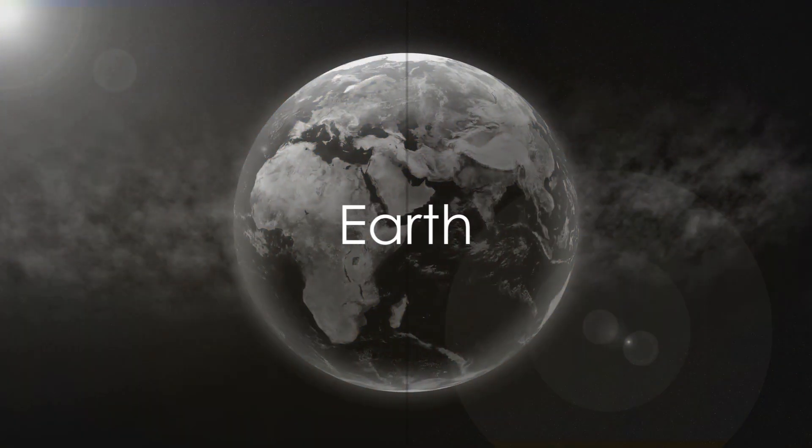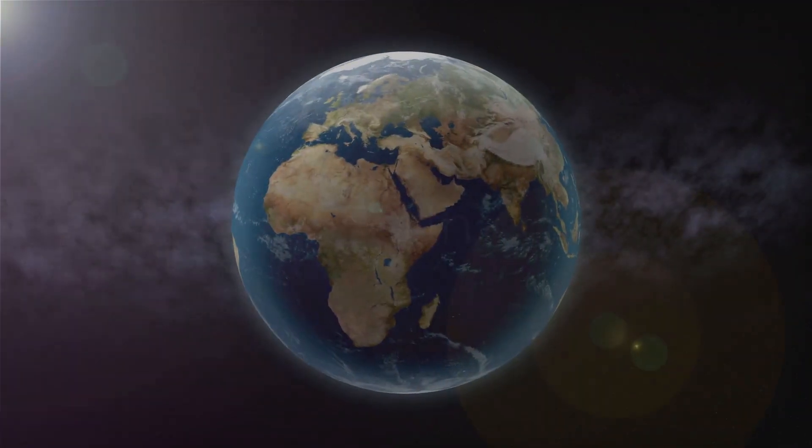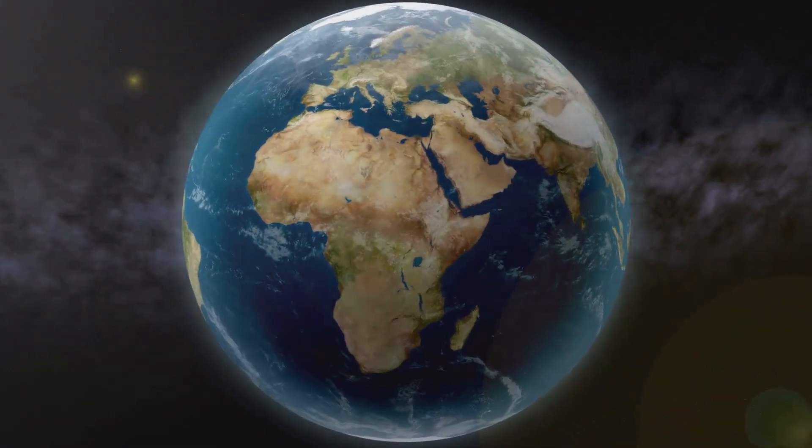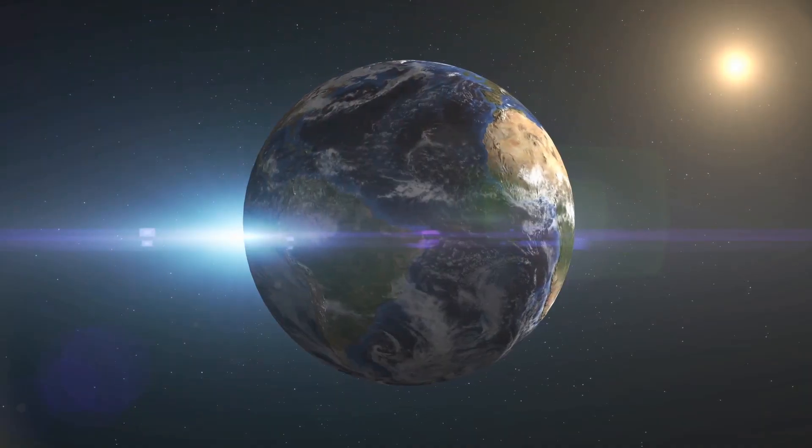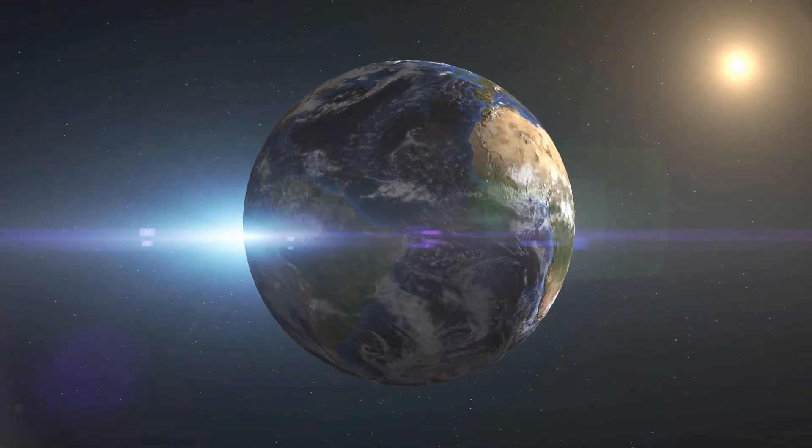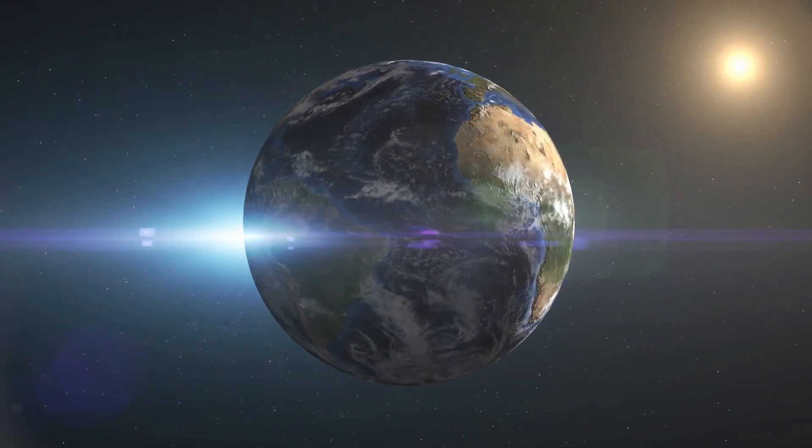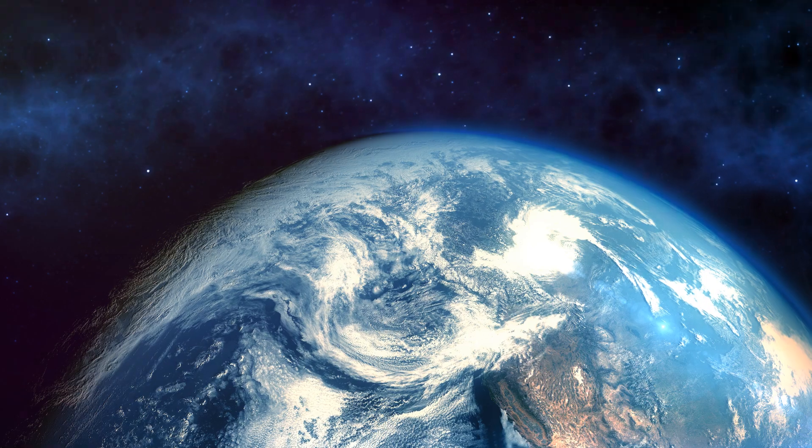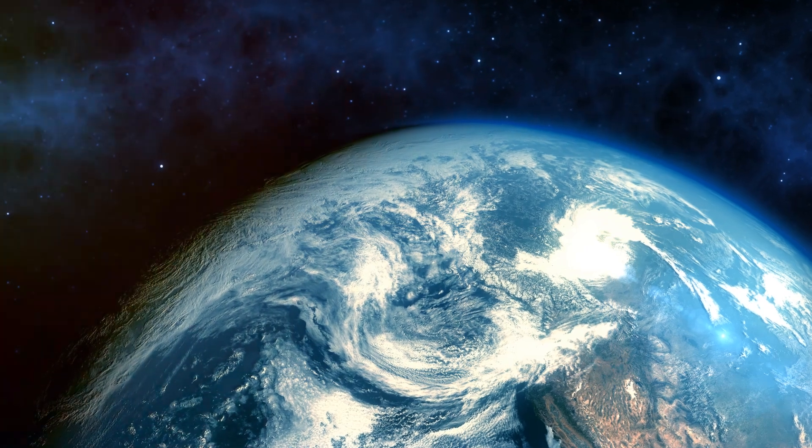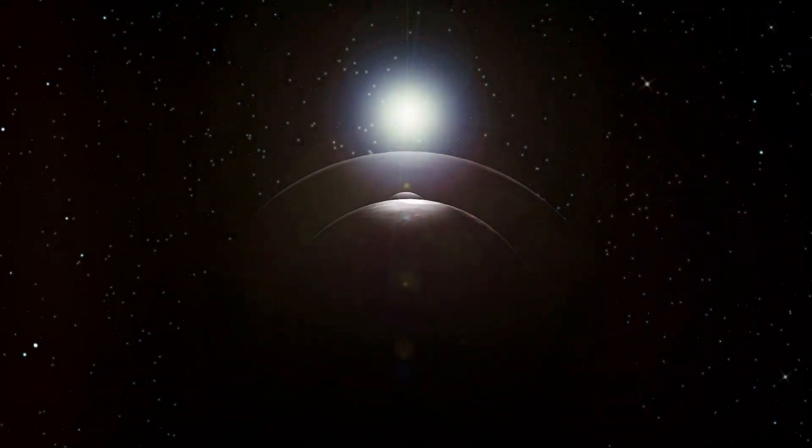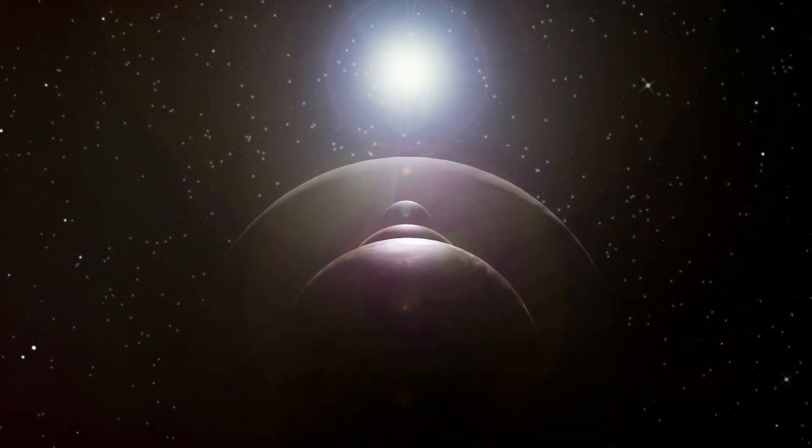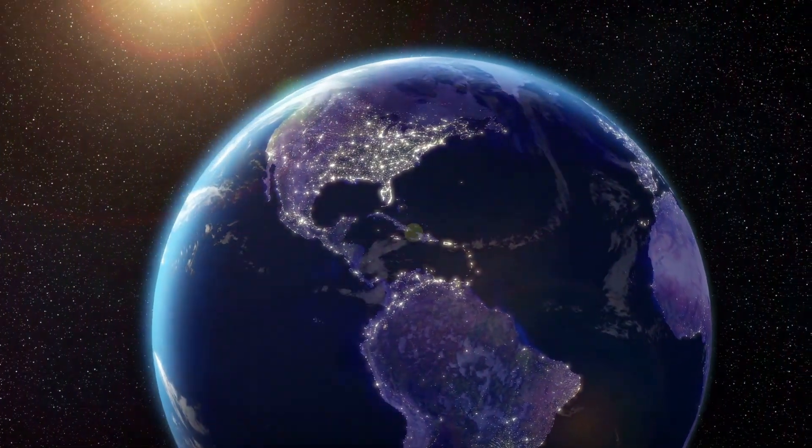Take a moment to consider our home, our very own planet Earth. This blue marble, swirling with clouds and teeming with life, is truly a marvel. Earth is the third planet from the sun, spinning on its axis, tucked away in a corner of the Milky Way galaxy. Its diameter, at about 7,900 miles, is substantial, yet it's dwarfed by the giants of our solar system. But Earth is unique. It's the only place we know of where life as we understand it exists.